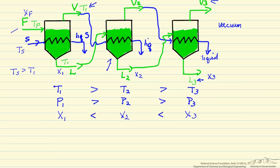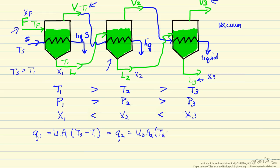If the feed comes in at approximately T1, all the energy goes to vaporize the liquid. We can write the heat transfer in the first effect as Q1 = U1 * A * (Ts - T1). This should be approximately equal to Q2, the heat transfer in the second effect, since we condense back all the vapor formed: Q2 = U2 * A * (T1 - T2). By the same argument, Q3 = U3 * A * (T2 - T3).